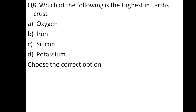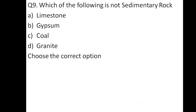Which of the following is the highest in the Earth's crust? Oxygen, iron, silicon, or potassium? The correct option is oxygen, the highest found in the Earth's crust. If we take Earth as a whole, then iron is the highest found in the Earth.